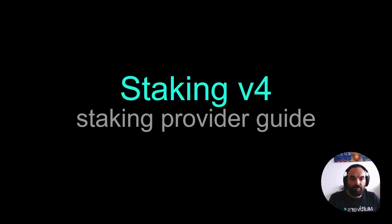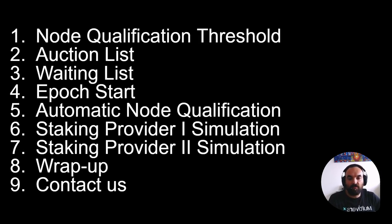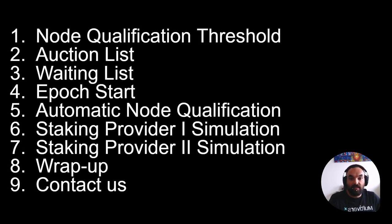We will go through node qualification threshold, auction list, what is the waiting list, and what happens at epoch start. We will explain automatic node qualification and go through two examples where we simulate two staking providers and the situations they could find themselves in. We will also suggest some strategies and have a brief wrap-up slide, plus a way for you to contact us with questions about staking v4.